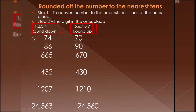Let's look at an example: 74 rounded to the nearest tens. At the tens place we have 7, and the one's place is 4, which is less than 5. When the one's place is less than 5, the tens place remains the same and the one's place becomes zero. So the rounded number of 74 is 70.